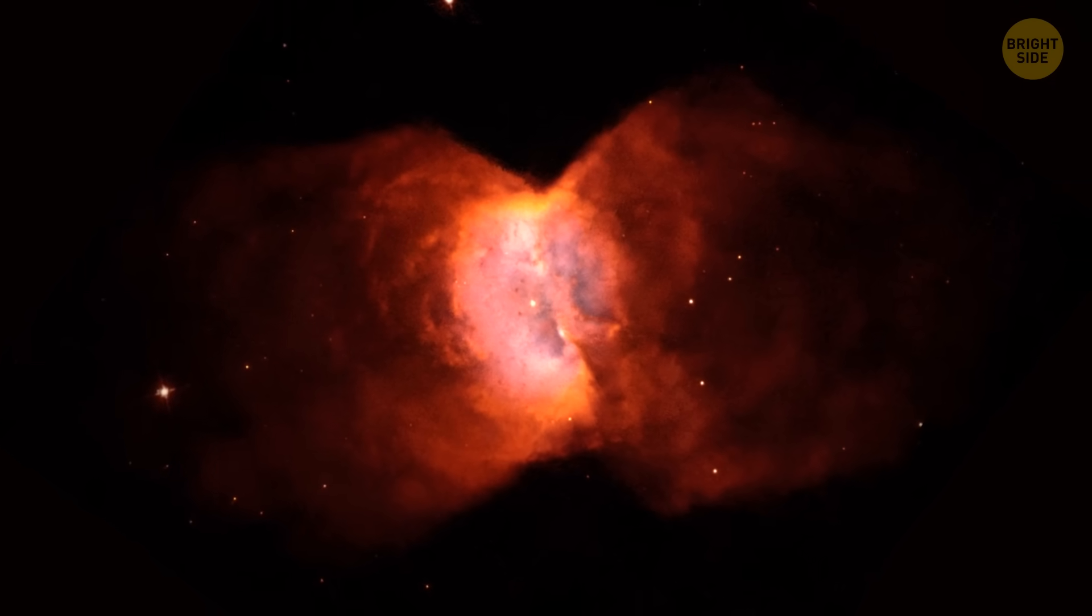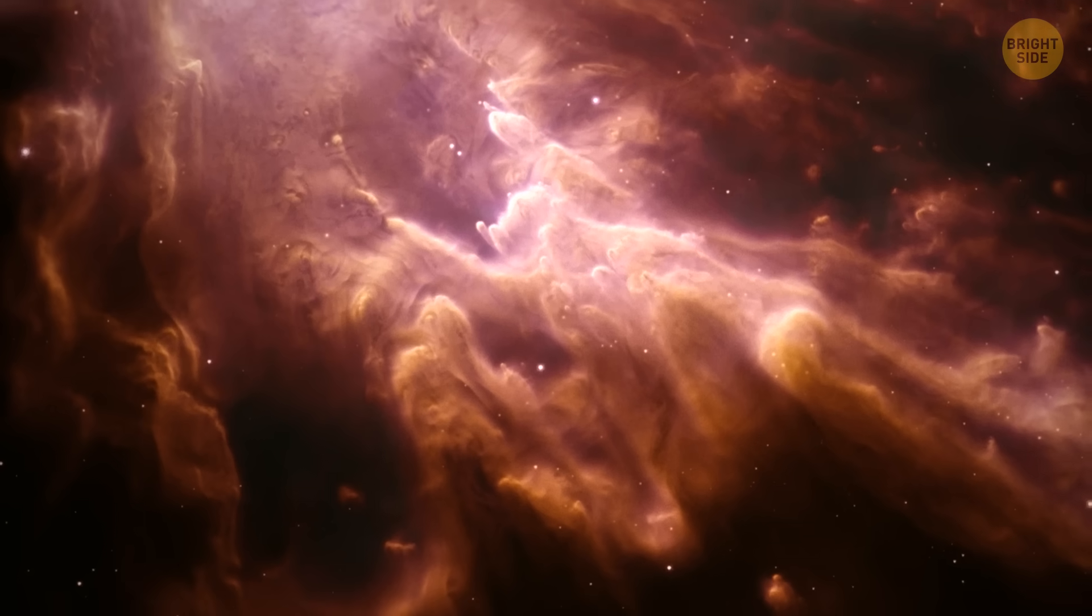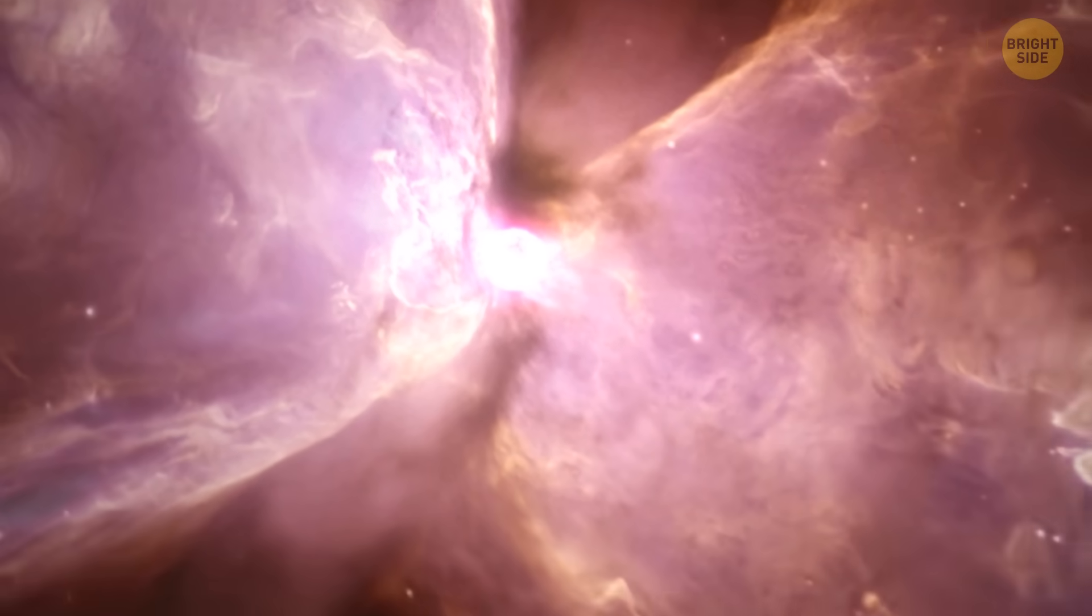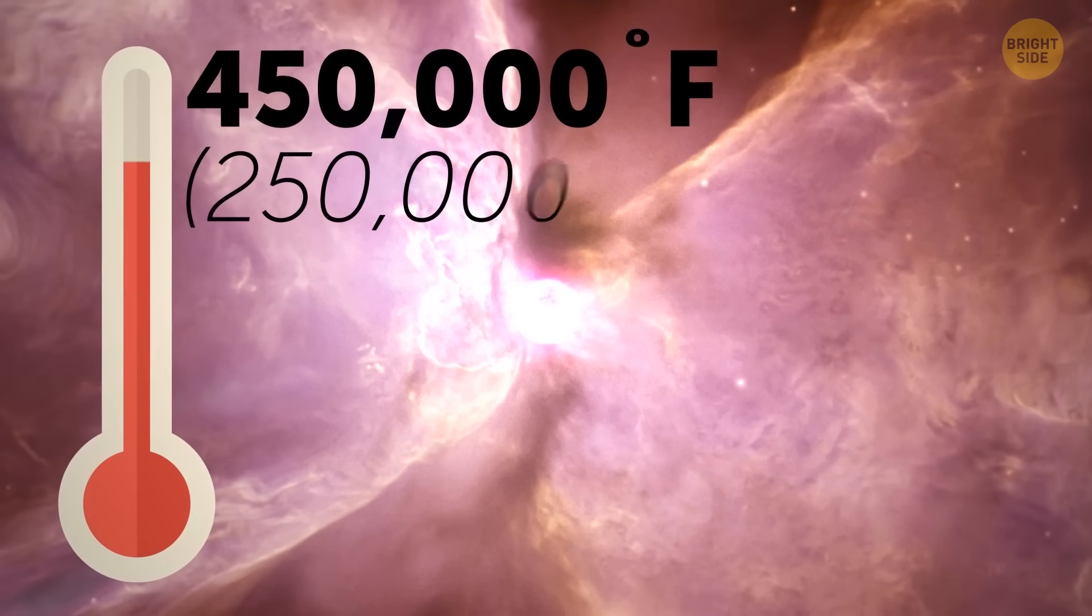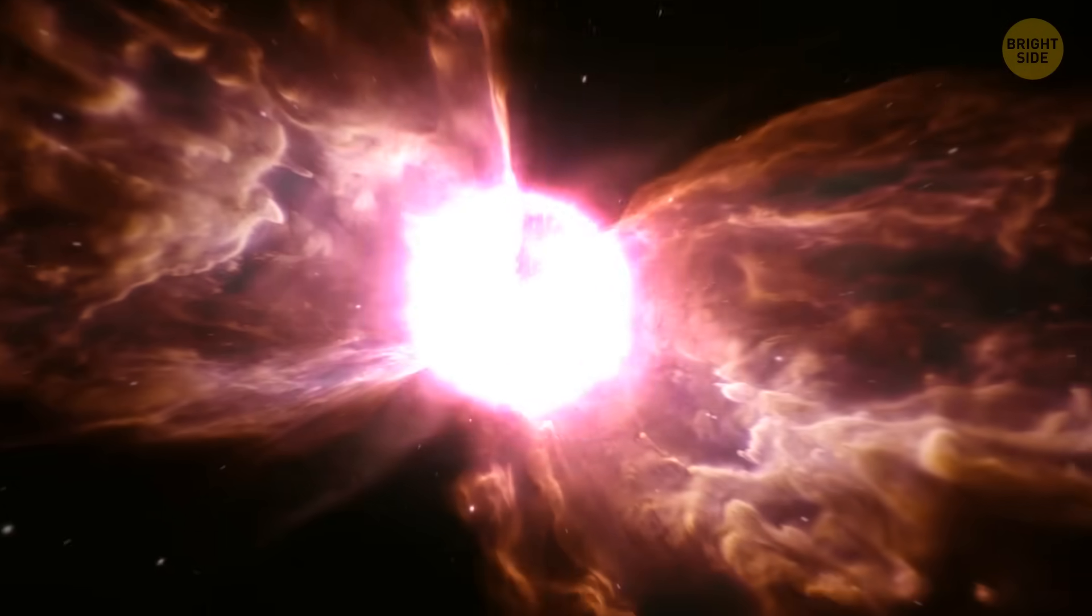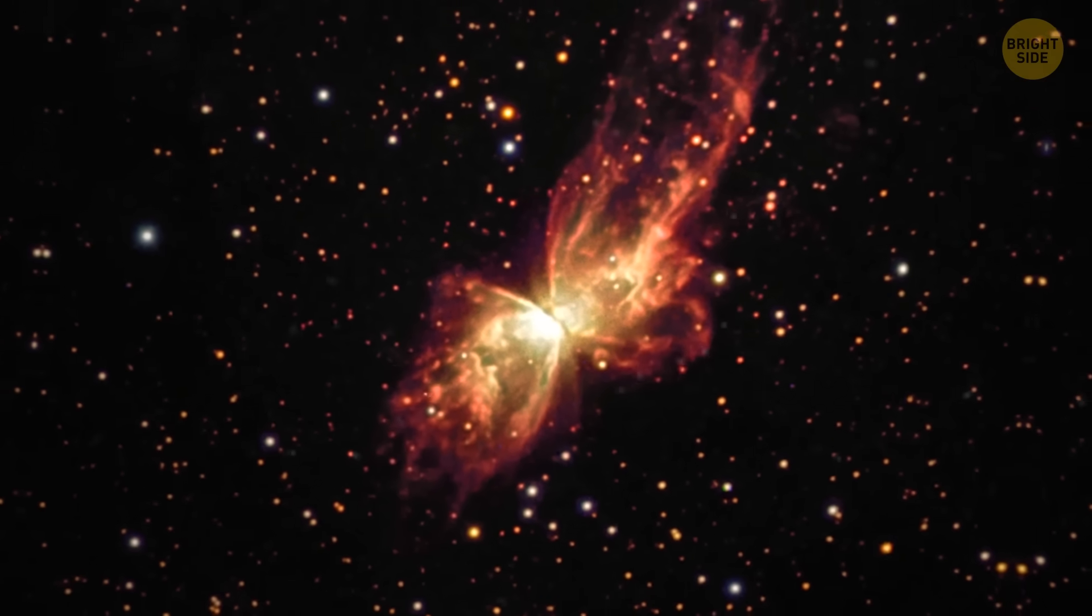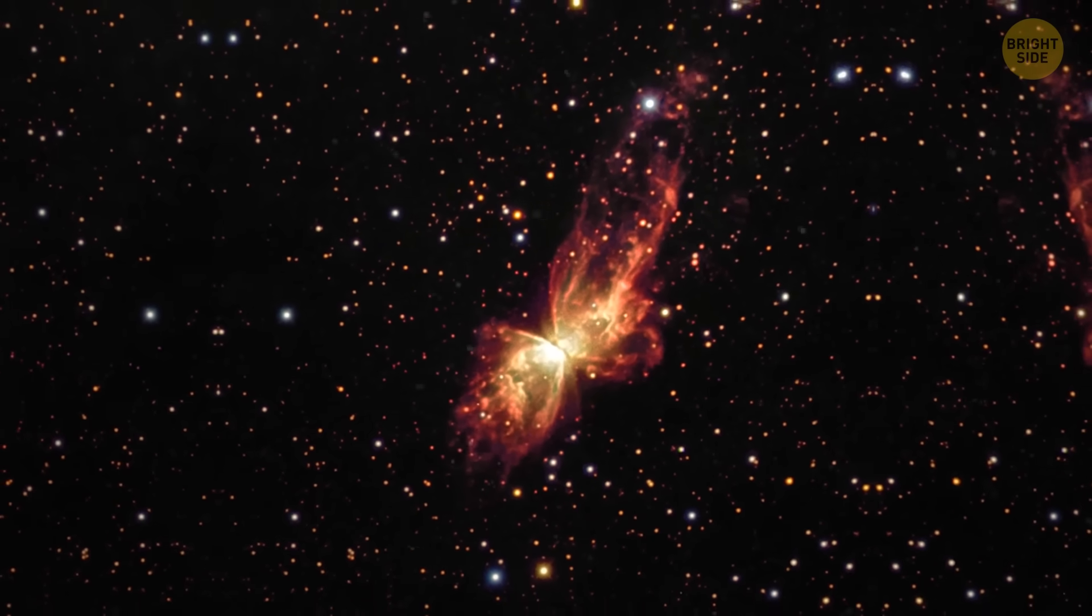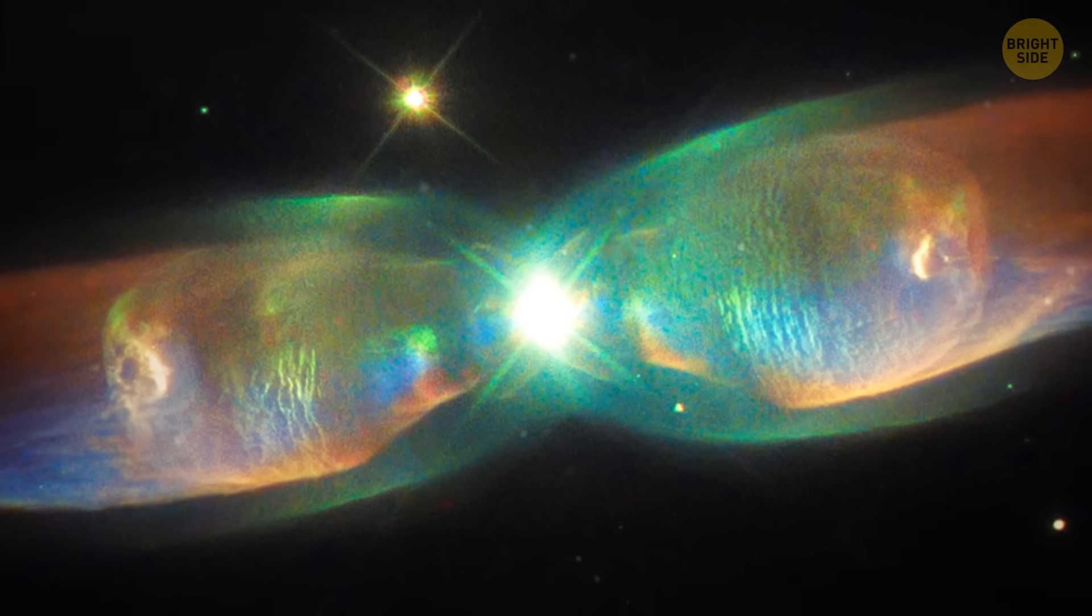Look at this butterfly. Its wingspan is more than three light-years. And the structure inside this nebula is one of the most complicated ever observed. The nebula's central star, a white dwarf, is heated to an incredible 450,000 degrees Fahrenheit. It means it was formed from another gargantuan star, more than five times the size of the sun. The white dwarf is surrounded by a thick disk of dust and gas at the equator. That's what probably makes the whole structure look like an hourglass, or a butterfly.